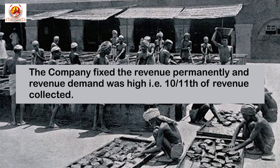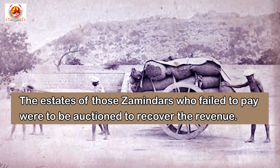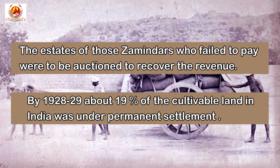Permanent Settlement was introduced in Bengal province — that is Bengal, Bihar, and Orissa — and later extended to the northern districts of Madras Presidency and districts of Varanasi. The company fixed the revenue permanently and the revenue demand was very high, that is 10/11 of the revenue collected. The zamindars were to give 10/11 of the rental they derived from the peasantry to the state, keeping only 1/11 for themselves. The estates of those zamindars who failed to pay were to be auctioned to recover the revenue. By 1928–29, about 19% of the cultivable land in India was under Permanent Settlement.